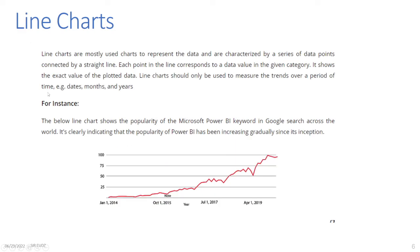Line Charts: Line charts are mostly used charts to represent data and are characterized by a series of data points connected by a straight line. Each point in the line corresponds to a data value in the given category. It shows the exact value of the plotted data. Line charts should only be used to measure trends over a period of time — for example, dates, months, and years. The below line chart shows the popularity of the Microsoft Power BI keyword in Google search across the world, clearly indicating that the popularity of Power BI has been increasing gradually since its inception.